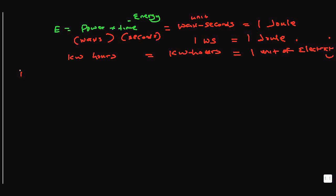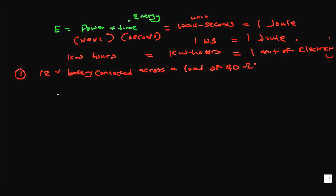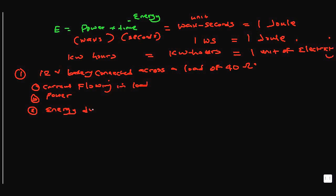We're going to do a simple problem involving electrical energy. We have a 12-volt battery connected across a load of 40 ohms. We'd like to know the current flowing in the load, the power, and the energy dissipated in 2 minutes.